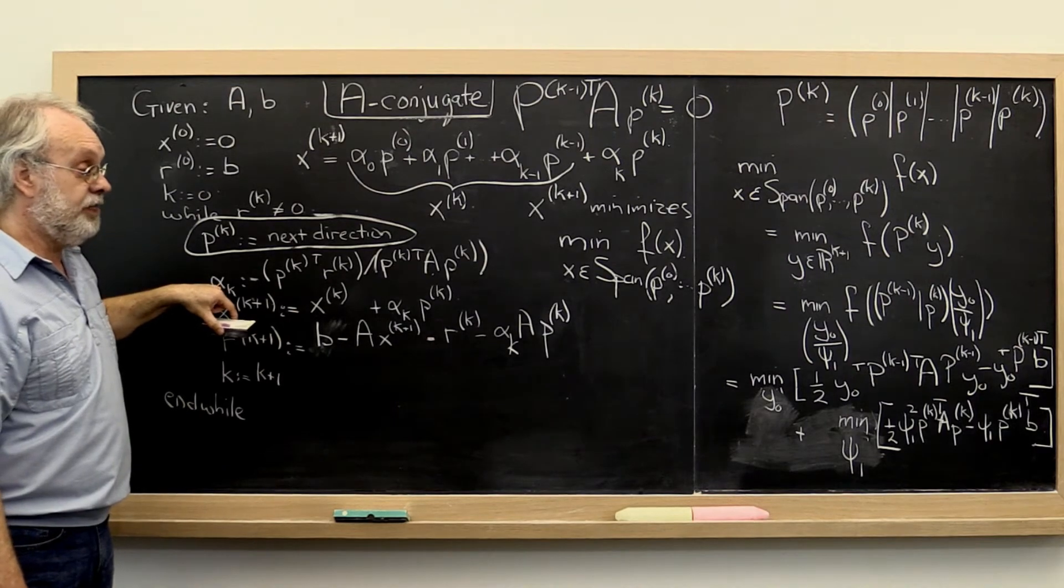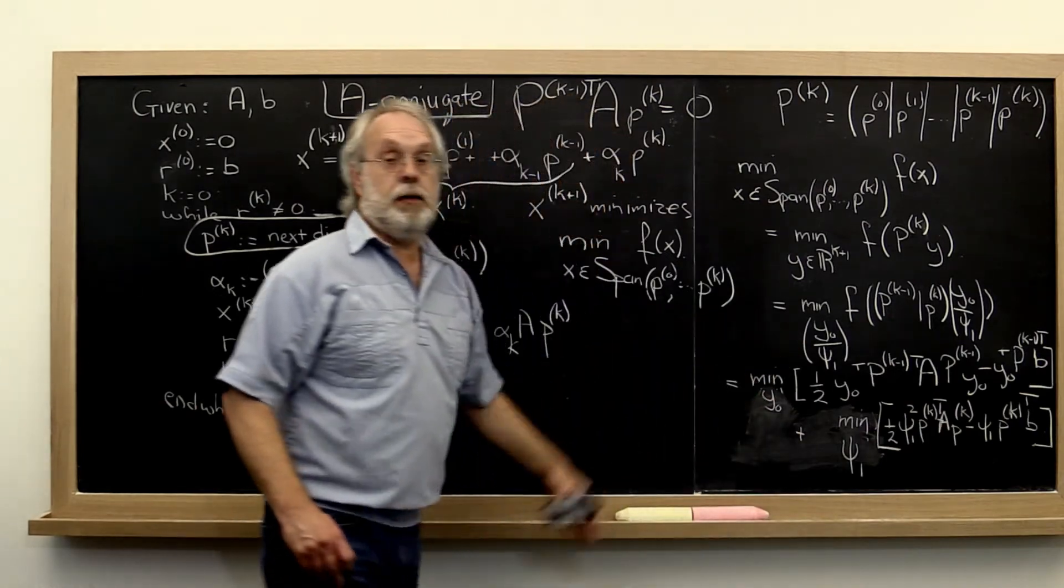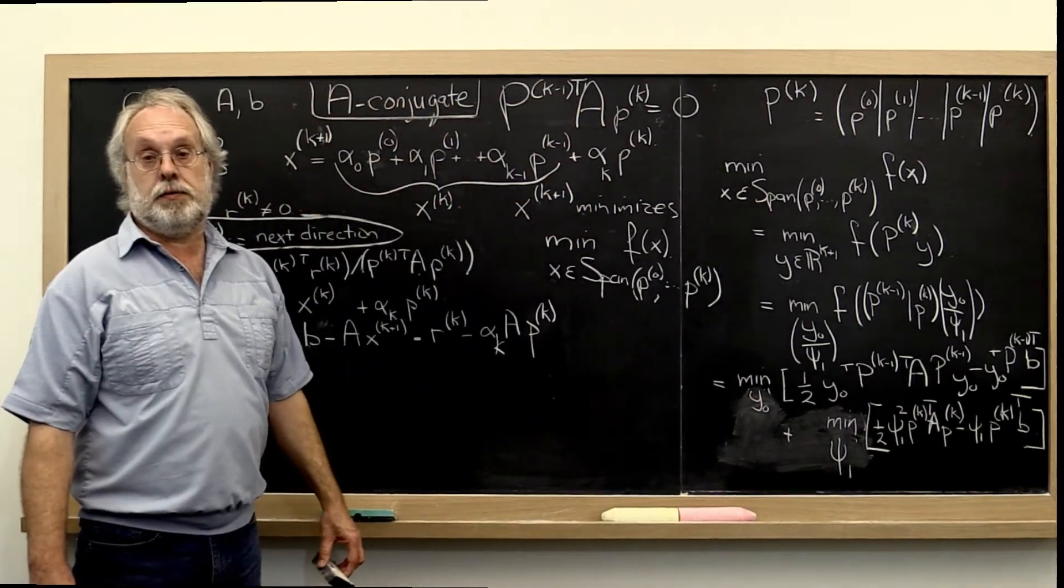And then this alpha_k is going to be exactly that psi 1 that came up in this expression right here.